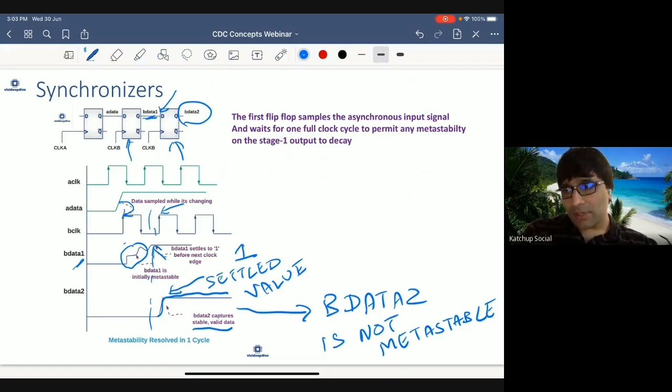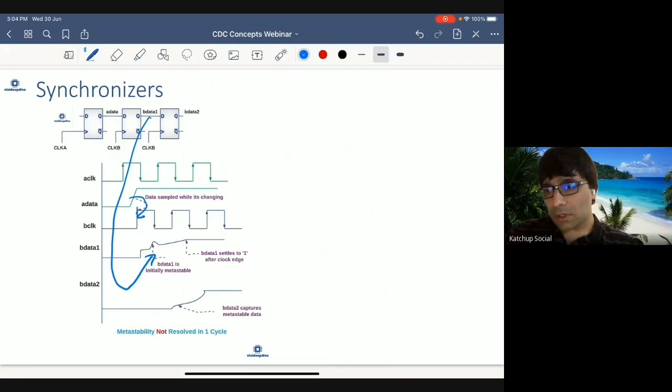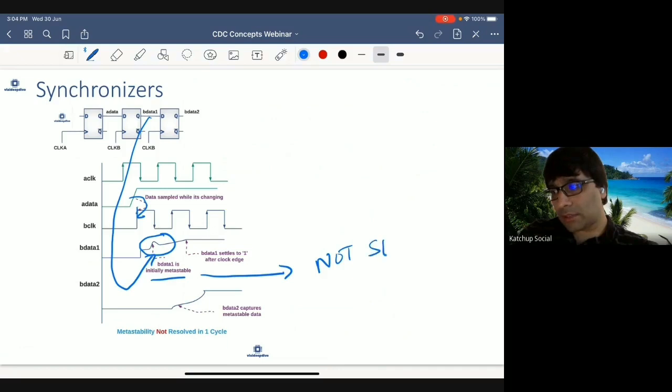So in this case, B data 1 settled in one cycle. It is possible, as if you remember the previous chapter, that it can take any amount of time for data to stabilize. So in this case, your data changes close to clock edge. Because of that, B data becomes metastable. Now this metastability is not settled in one cycle.